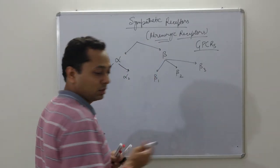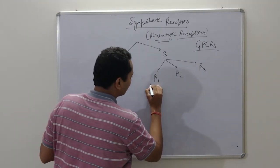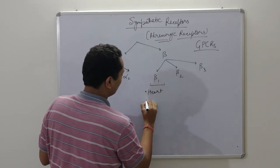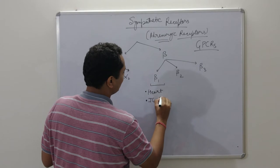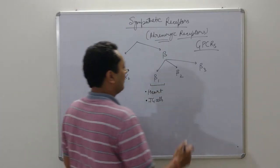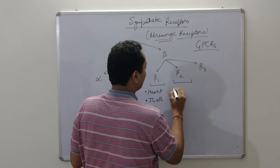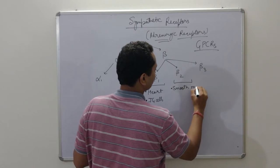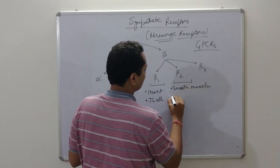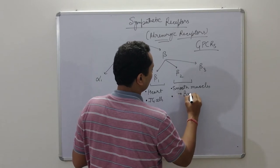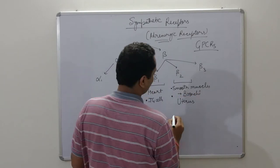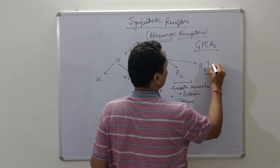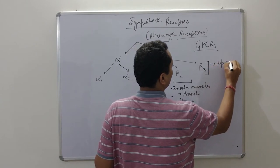To understand their actions, we first need to know their locations. Beta-1 receptors are located in the heart and in the JG cells — juxtaglomerular cells. Beta-2 receptors are located in smooth muscles, which include the bronchi and the uterus. Beta-3 receptors are exclusively present in the adipose tissue.